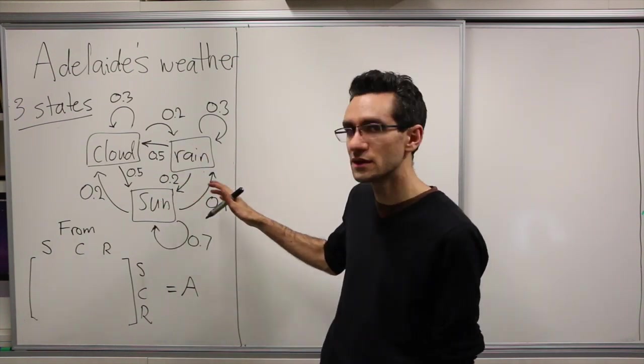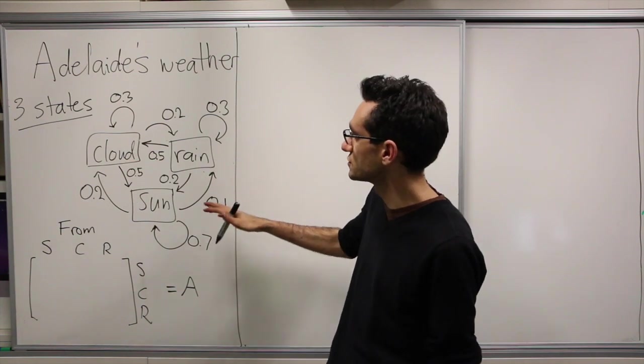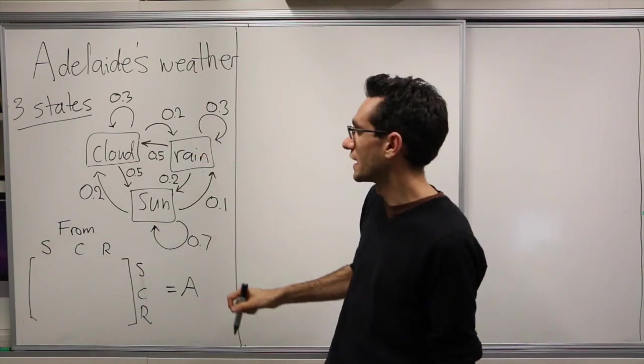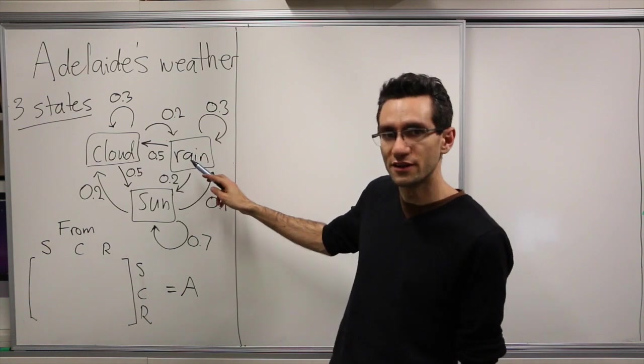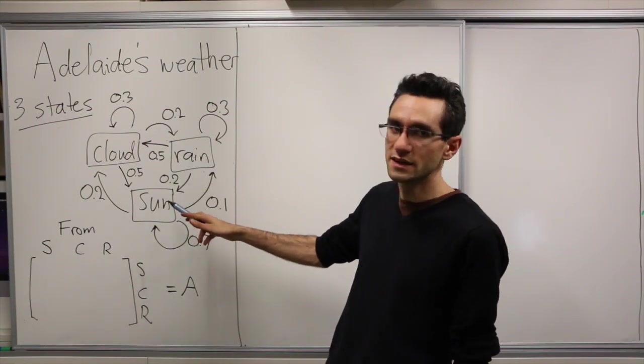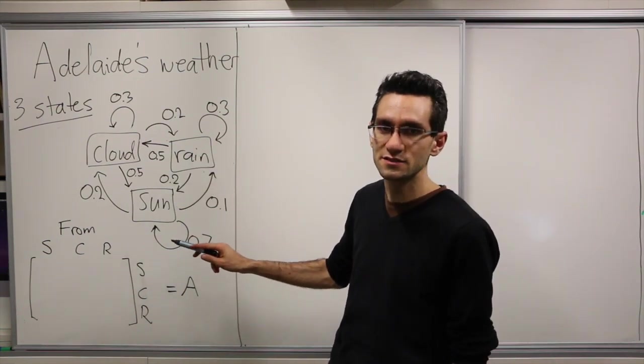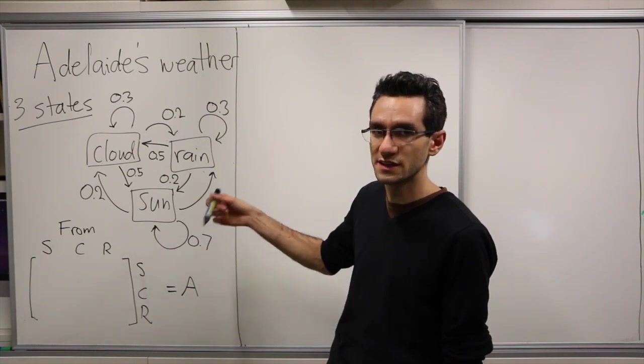So I've drawn up here a diagram of the system with the three different weather states that we can have: we can have cloudy, we can have raining, or we can be sunny, and the different probabilities for moving from one state to the next, from one day to the next.